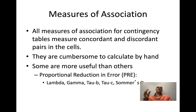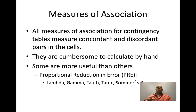All measures of association for contingency tables are comparisons of concordant and discordant pairs in the cells. Lambda, gamma, tau b, tau c, and Sommers' D are PRE (proportional reduction in error) statistics and can be interpreted as percentages — just like R-squared. We can report that knowing the relationship between two variables reduces our error in estimation by a certain percentage, or gives us a certain level of confidence in understanding the outcome.